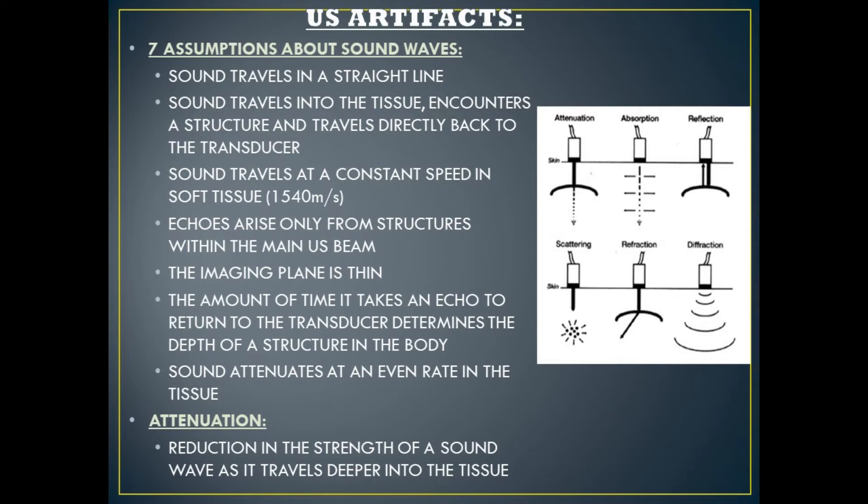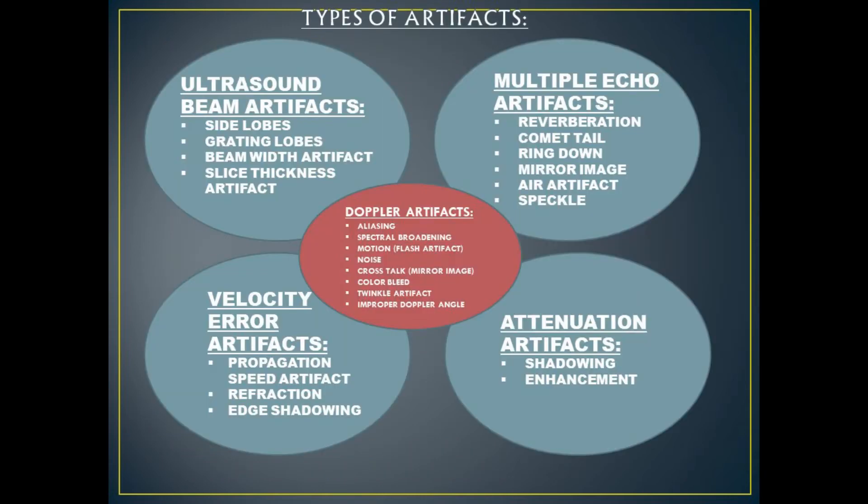Attenuation is a reduction in the strength of a sound wave as it travels deeper and deeper into the tissue. There are five categories of artifacts in ultrasound. Category one are ultrasound beam artifacts, which are side lobes, grating lobes, beam width artifact, and slice thickness artifact.